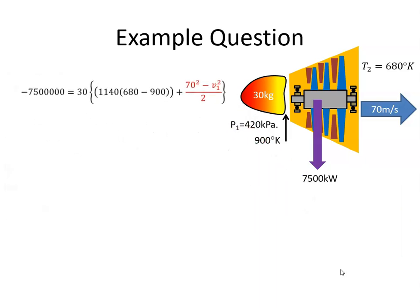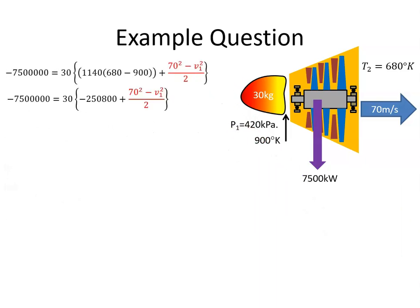The first thing we can do is multiply out the values here. So 1140 times 680 minus 900 is minus 240,800. And then divide both sides by 30.